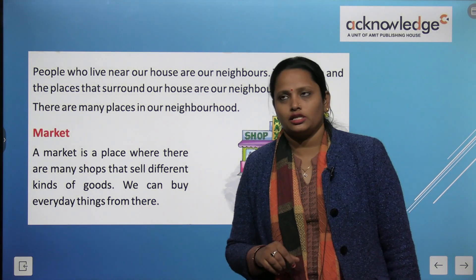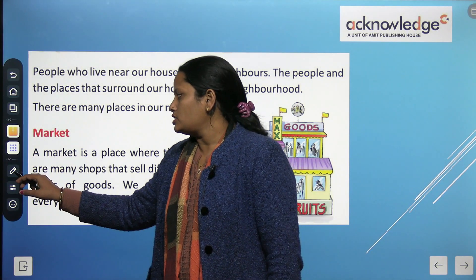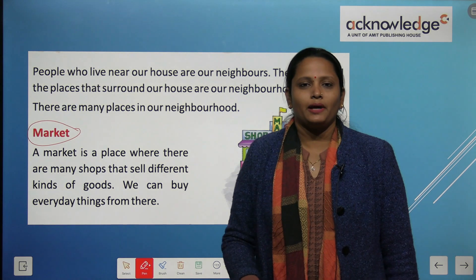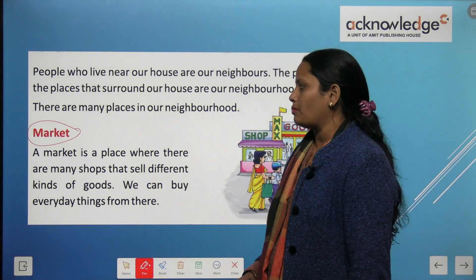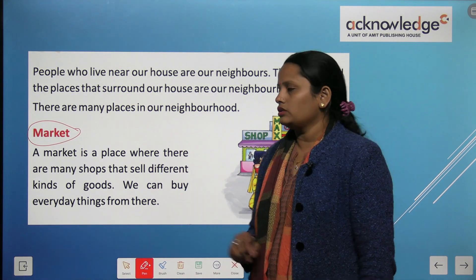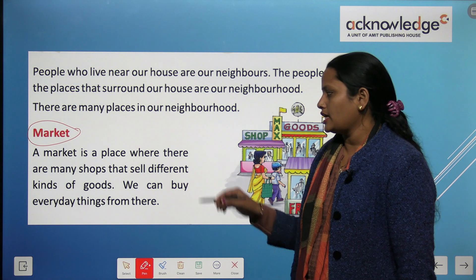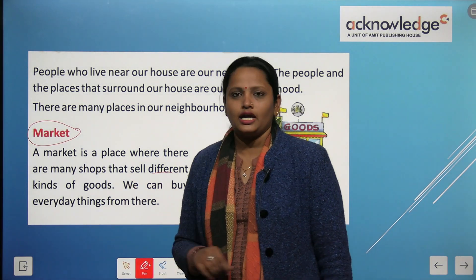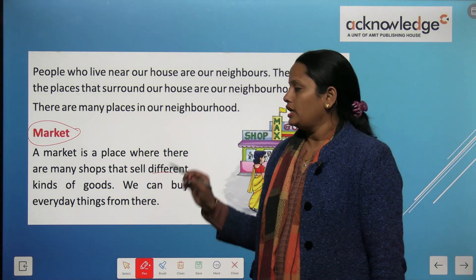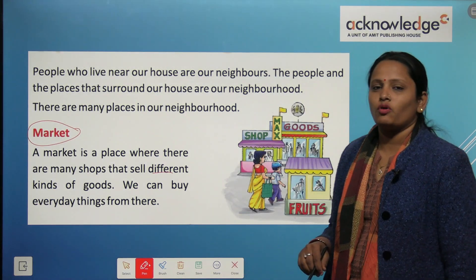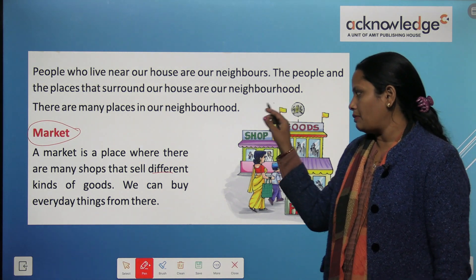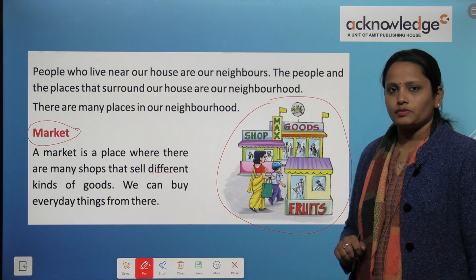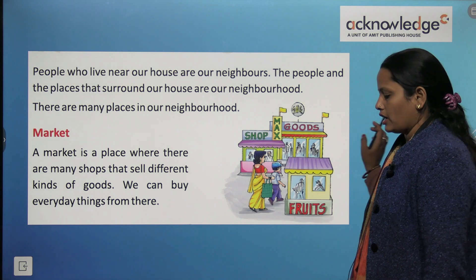The first place is a market. The market is a place where there are many shops that sell different kinds of goods. The market is a place where you can buy everyday things.